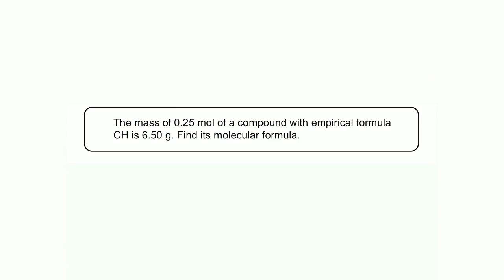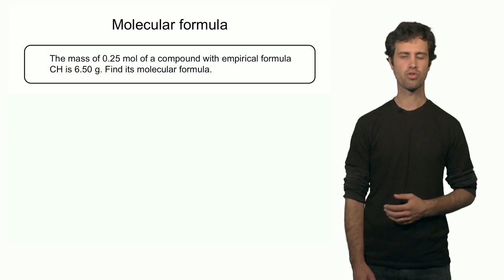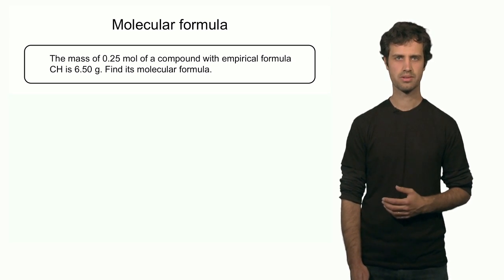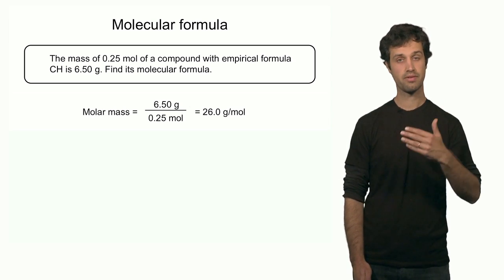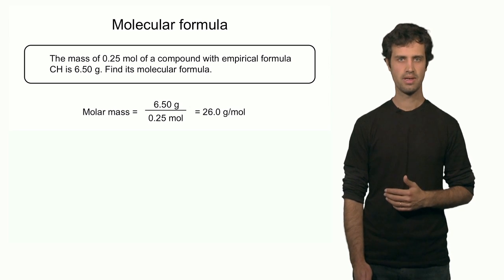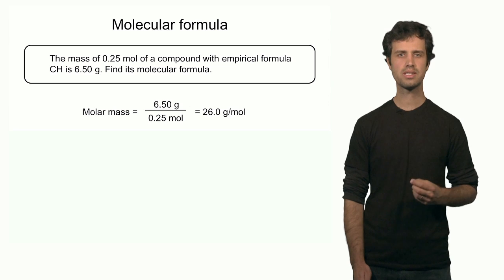Let's look at this example. This structure has the empirical formula CH. It is also given that 6.5 grams of this compound contains 0.25 moles. These two pieces of information are enough to determine the molecular formula. The molar mass is determined by the total number of grams divided by the number of moles, and that is 26. So this compound has a molar mass of 26 grams per mole.